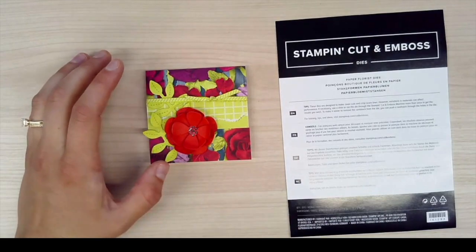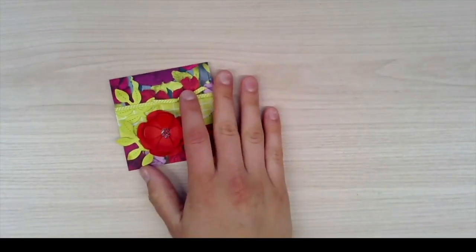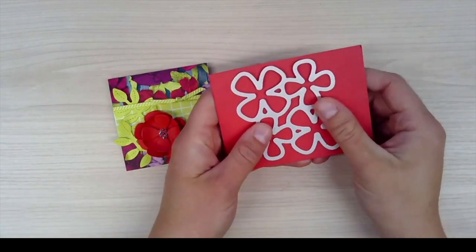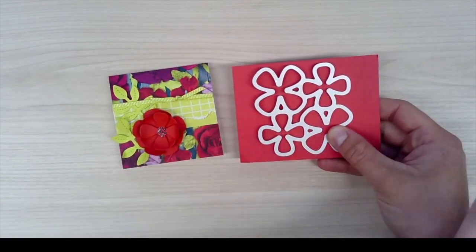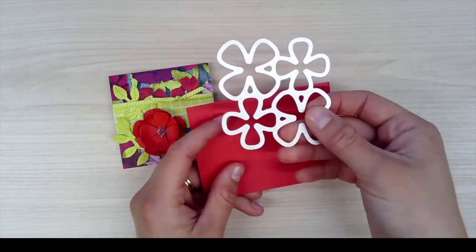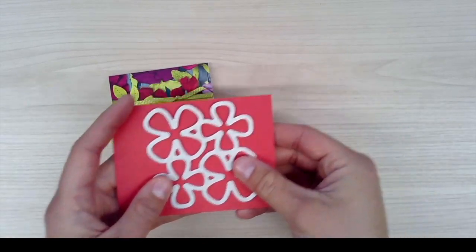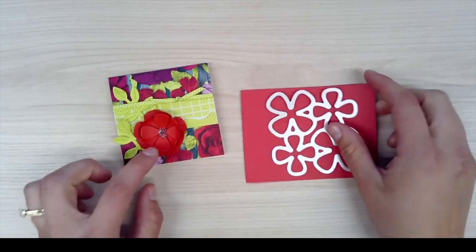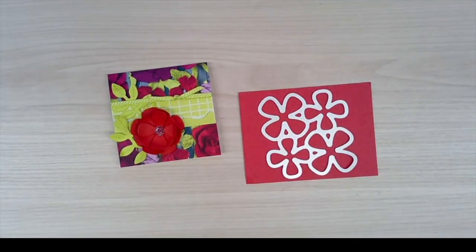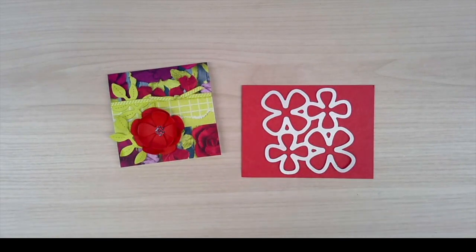One of my absolute favorite aspects of this die set is that the dies that you need to make this flower, or all the flowers really in the die set, are all connected. So all you have to do is run it through once in the die-cutting machine and it will die-cut all the flowers you need to make the one little flower here. So that is one of the really cool things about this.